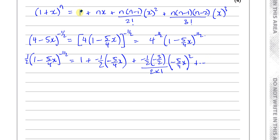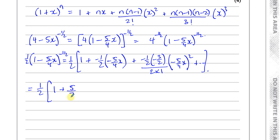Simplifying inside the brackets: the constant is 1. For the x term, minus times minus gives plus, so we get +5/8 x. For the x² term, we also get a positive result: (1/2)(3/2)/2 times 25/16 gives 3/8 times 25/16, which equals 75/128 x². So the bracket simplifies to 1 + (5/8)x + (75/128)x².